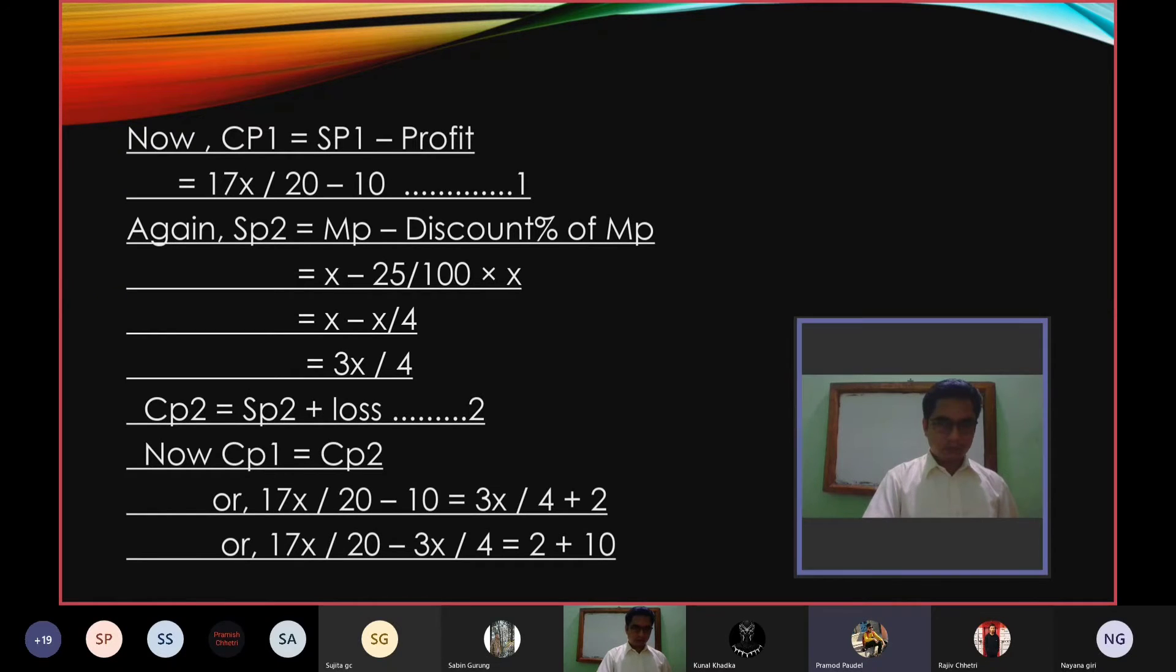Again, SP2 is equal to MP minus discount percent of MP, equals x minus 25/100 x, equals x minus x/4, equals 3x/4.